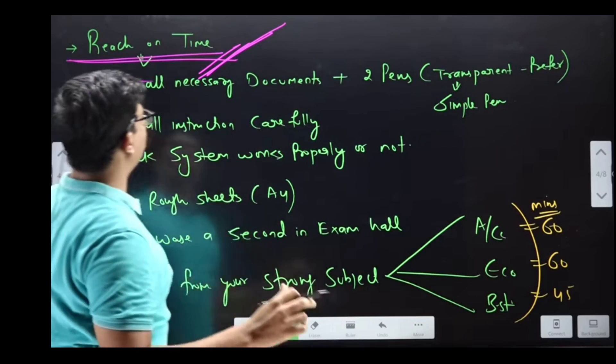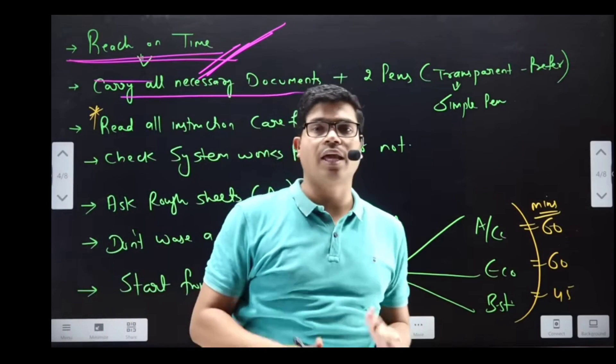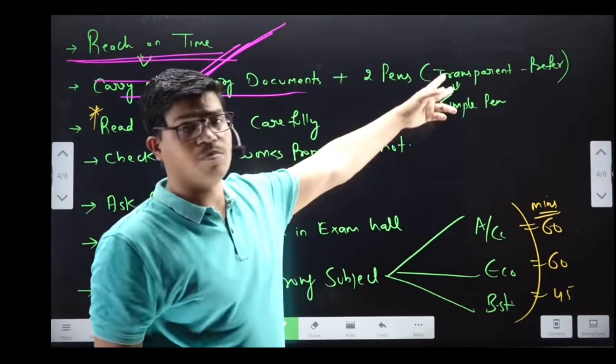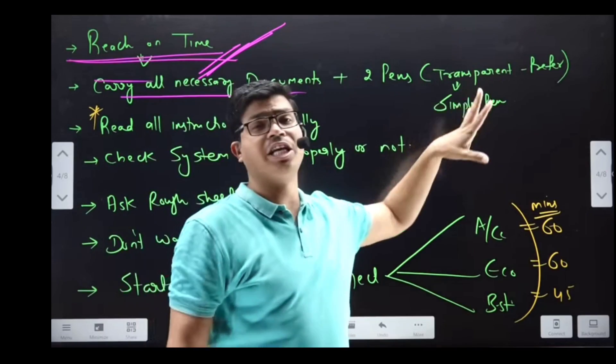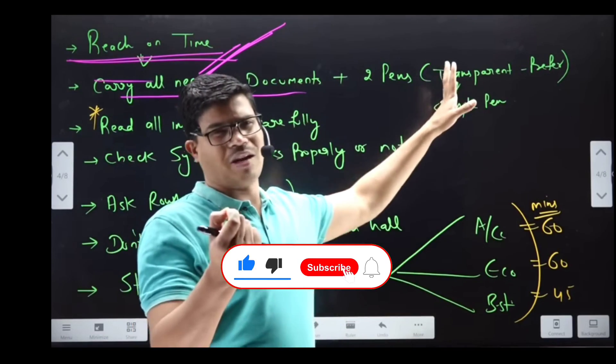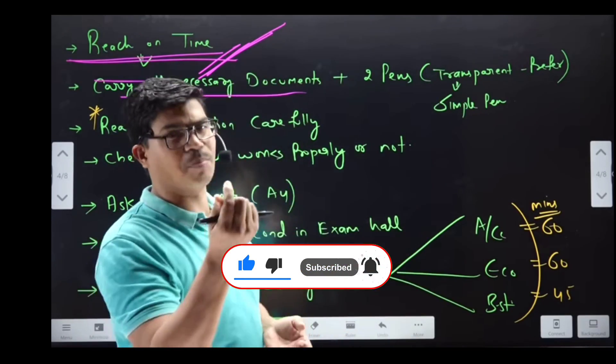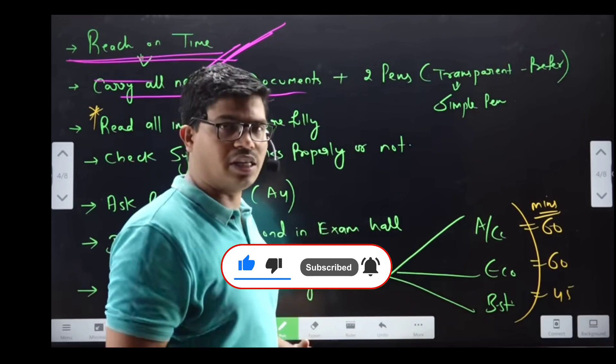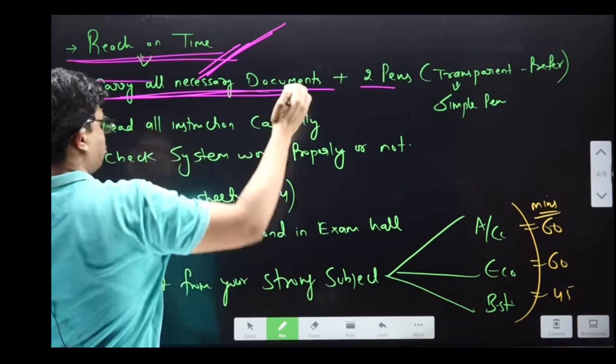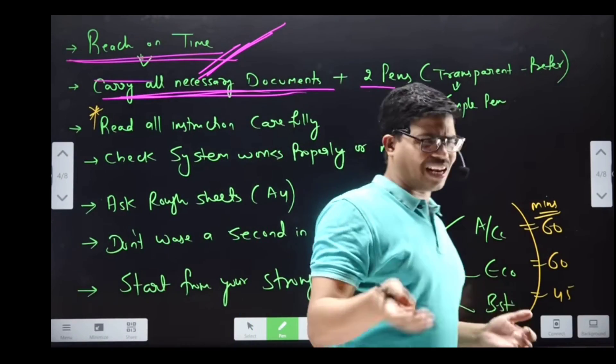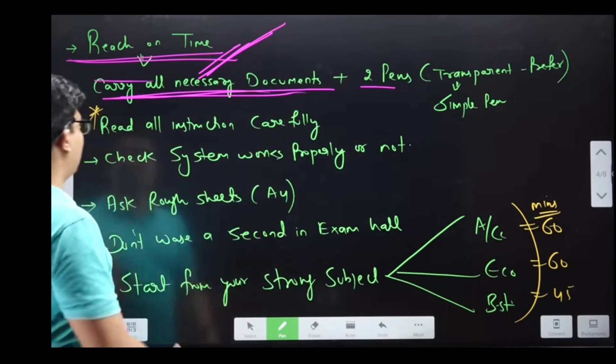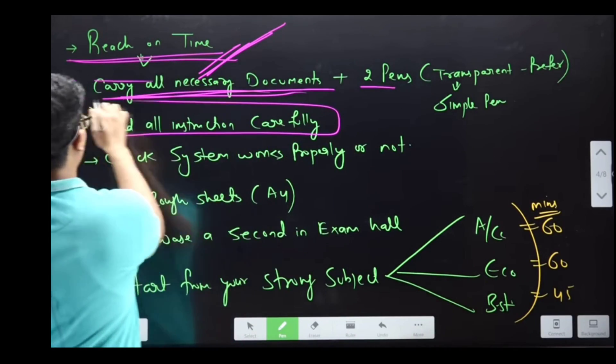Reach the examination on time with necessary documents - your admit card, your ID, whatever you need. Take at least two transparent pens. It doesn't need to be a very high design pen. In addition to your card or declaration form, everything is written in the admit card. Take it and reach on time. Read all instructions carefully.